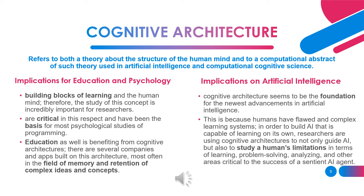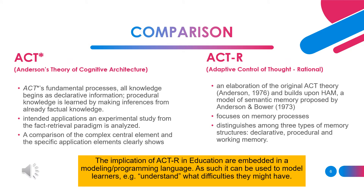The implication on artificial intelligence: the idea of cognitive architecture may seem foreign to many of us, but the fact that it can be boiled down to a theoretical structure that offers a window into the human mind is incredible. Comparing Anderson's theory of cognitive architecture to Adaptive Control of Thought, Rational — ACT-R fundamental processes: all knowledge begins as declarative information, and procedural knowledge is learned by making inferences from already factual knowledge.